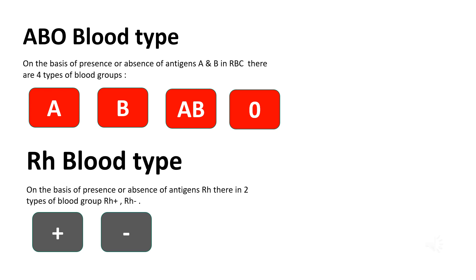One is the ABO blood type, where on the basis of the presence or absence of antigen A and B, there are A, B, AB and O blood groups. A and B have antigen A and B respectively; AB has both and O has neither of them.